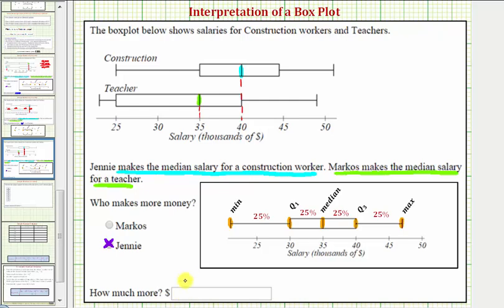The next question is how much more does she make? From the horizontal axis, she makes forty thousand dollars per year. Marco makes thirty-five thousand dollars per year. So the difference would be how much more she makes, which would be five thousand dollars per year.